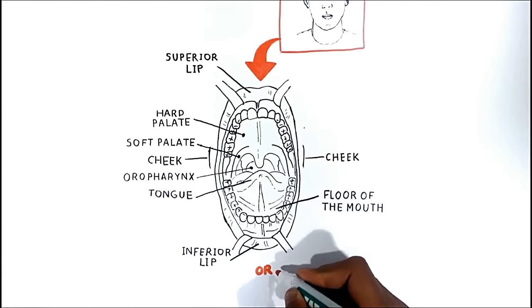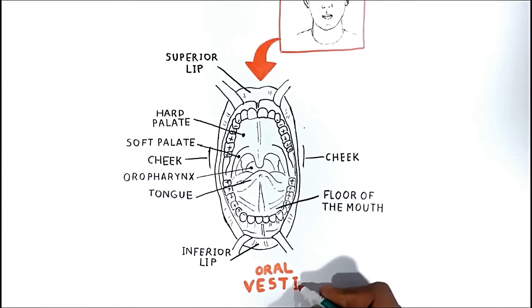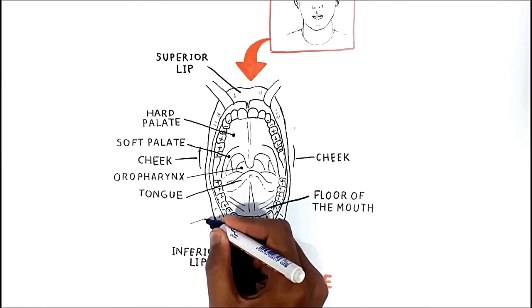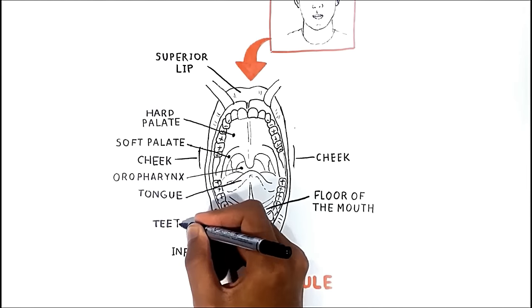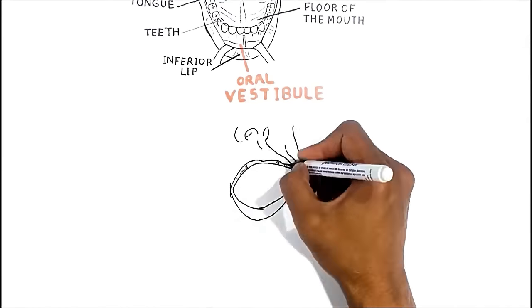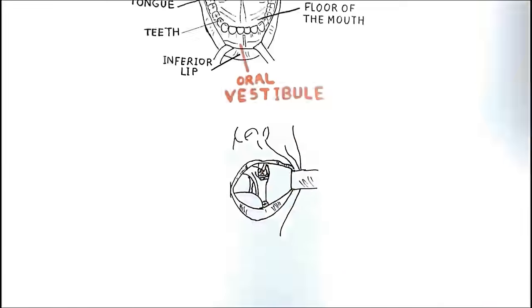The vestibule is situated anteriorly right here. It is the space situated between the cheeks and lips and here the teeth.